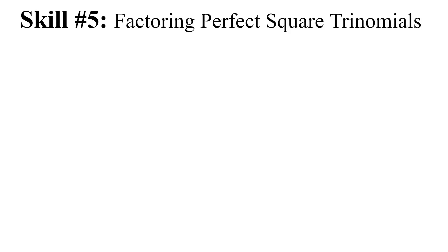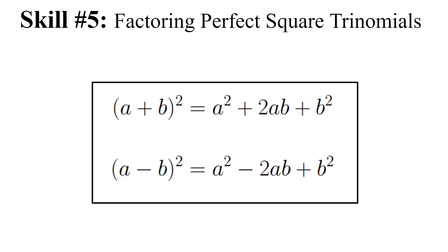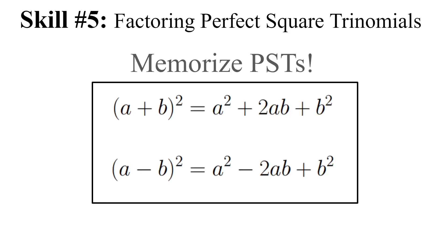Back to the slides. Skill number 5 is factoring perfect square trinomials. The two formulas are: (A + B)² = A² + 2AB + B², and (A − B)² = A² − 2AB + B². To do these efficiently in a standardized testing setting, you need to memorize them.